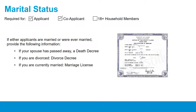Marital Status. This requirement applies only to you and your co-applicant — you do not need to supply these for other household members. If you are or were ever married, provide the following based on your situation: if your spouse has passed away, provide a death decree; if you are divorced, provide a divorce decree; and if you are currently married, please provide a marriage license.